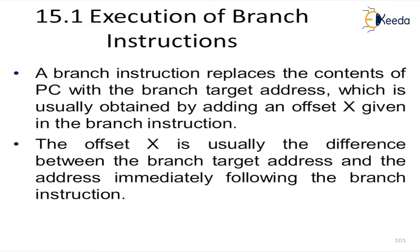Now, execution of a branch instruction. Branch instructions are very important because they allow your CPU to execute different sorts of instructions that have been linked with it. A branch instruction replaces the contents of the PC with the branch target address, which is usually obtained by adding an offset X given in the branch instruction. The offset X is usually the difference between the branch target address and the address of the branch instruction. When you want to find the offset, you need two things: where the branch instruction is stored, and what is the branch target address, including the address immediately following the branch instruction.